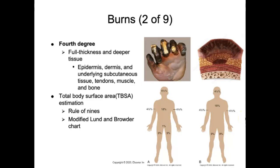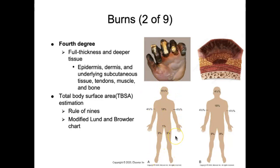As nurses, you can estimate the total body surface area (TBSA) burned using the rule of nines. In an adult, the entire head is 9%, the thorax is 9%, the abdomen is 9%, each entire upper limb is 9%, and the anterior and posterior lower limb are each 9%. Alternatively, the modified Lund and Browder chart uses a body outline to mark burned areas and calculate the area using an age table, not including superficial burns.